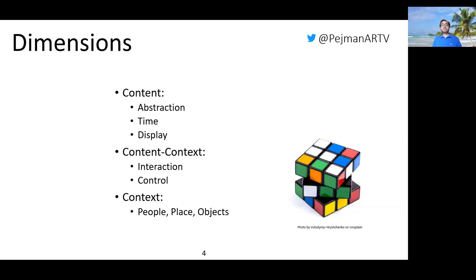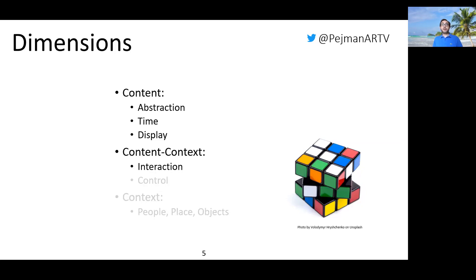We capture the often implicit design decisions in a set of dimensions. These dimensions consist of a set of options that capture the relationships between various elements within content, between content and the world outside — i.e., context — and between various elements within context. Context-related dimensions will be covered in a forthcoming publication. Today, I will talk about three content-level dimensions: abstraction, time, and display, and a content-context-level dimension: interaction.